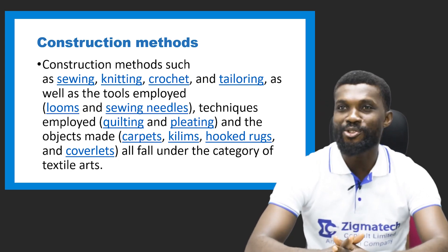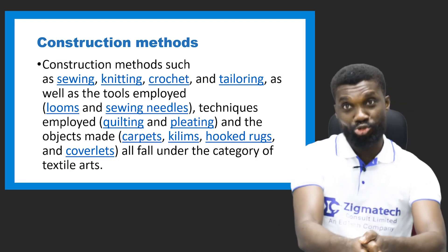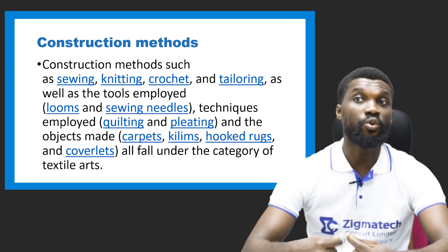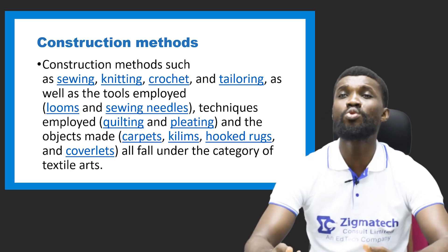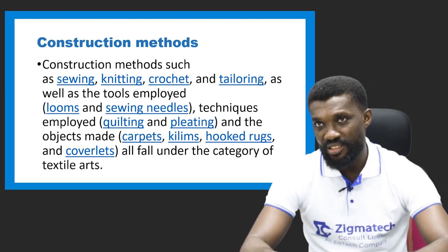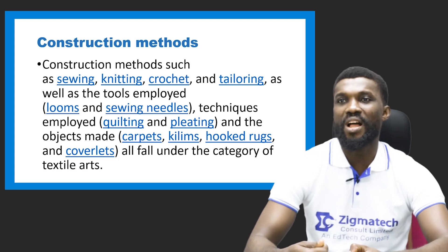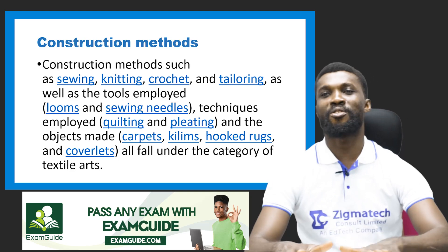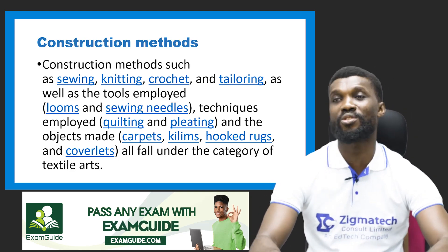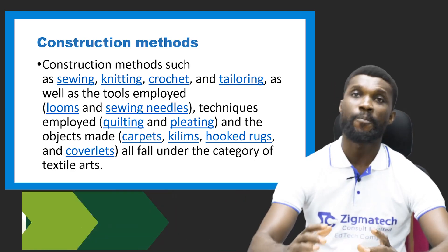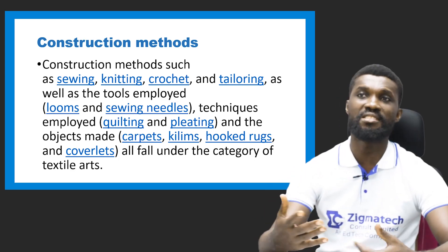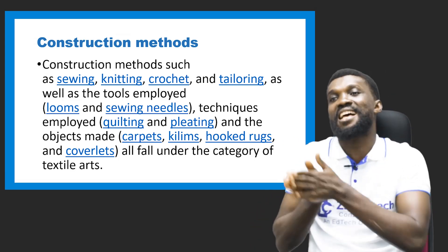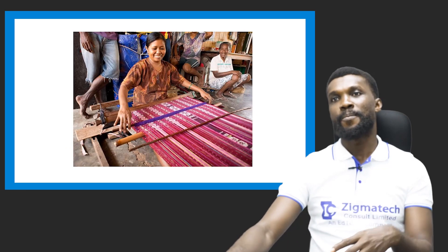Now let's look at the construction method of textile. We've talked about the textile arts — now we're looking at the construction method, which is the craft method. The construction methods include sewing, knitting, crocheting, and tailoring, as well as the tools and equipment such as the loom, sewing machines, and needles. The techniques employed include quilting and plaiting, and the objects made — such as carpets, hooked rugs, and coverlets — all fall under the category of textile art.